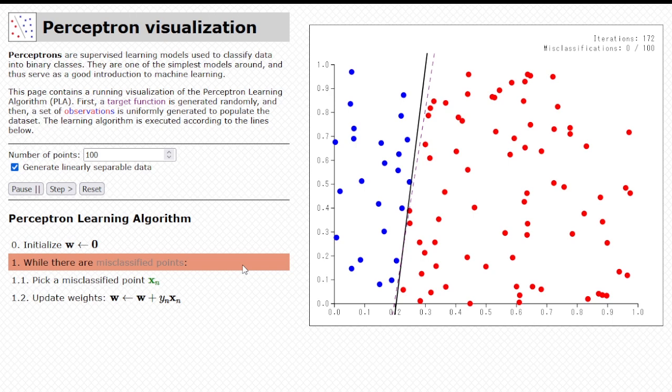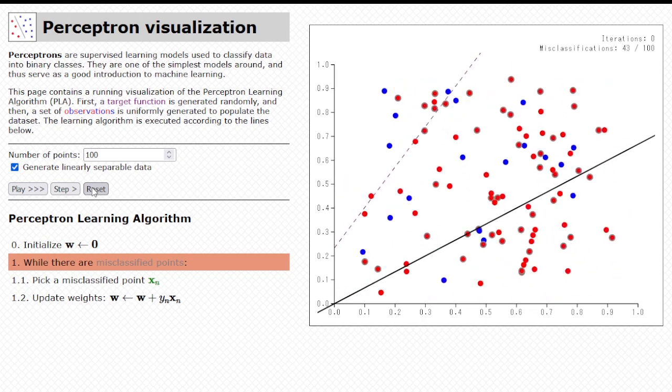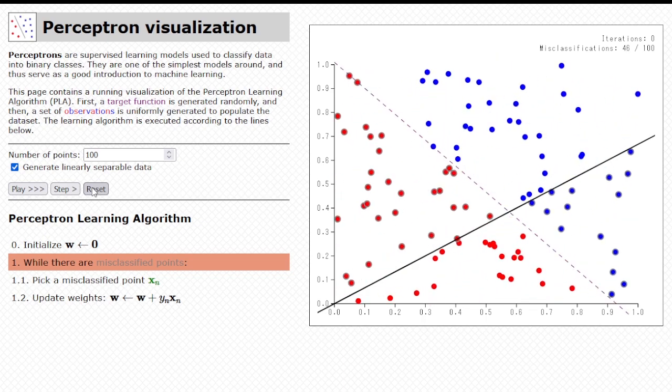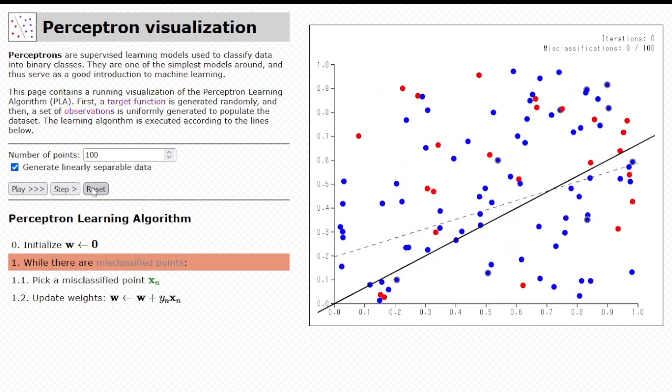There are some configurations that we can toy around with. For example, if you want to run the simulation again, you can simply press the reset button, and there's a quite fancy full animation of the points rearranging themselves, and the new target function being generated, right?